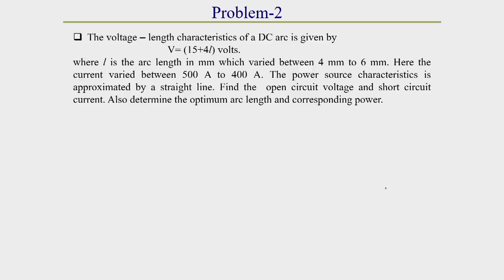The problem statement is: the voltage-arc length characteristics of a DC arc is given by V = 15 + 4L, where L is arc length in millimeters, varying between 4 to 6 mm. At L = 4 mm the current is 500 ampere, and at L = 6 mm the current is 400 ampere. The power source characteristics is approximated by a straight line.